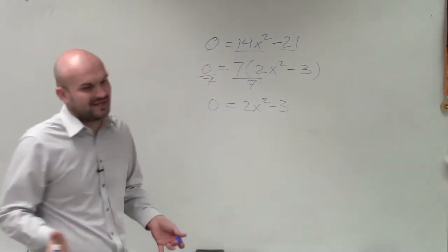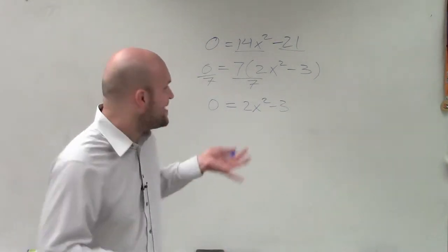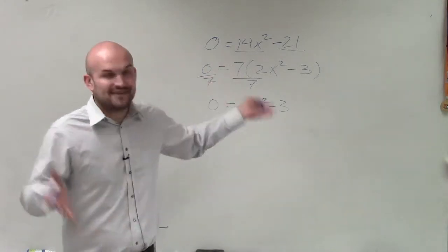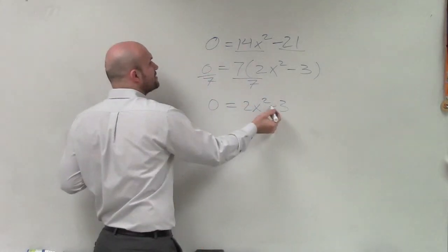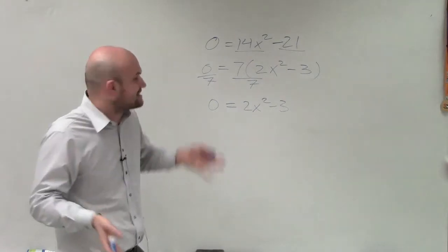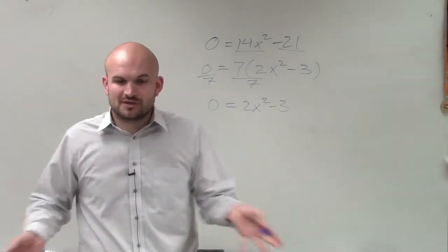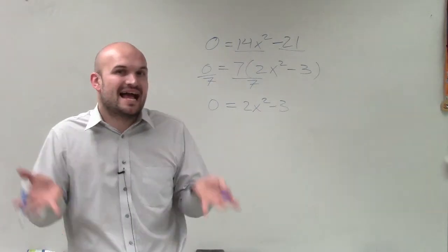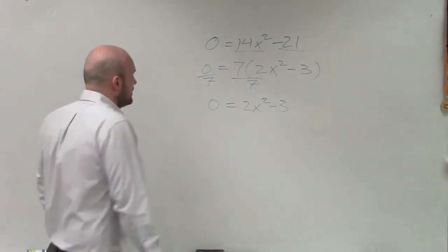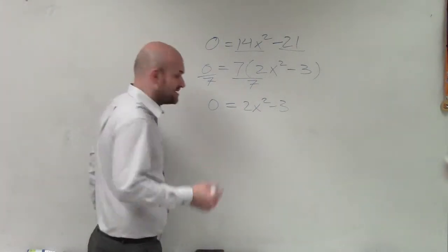And the importance of this, which you need to understand, is that this 7 is not affecting our solutions. The solution for 2x² - 3 is going to be the exact same solutions for 14x² - 21. If you graph both of those, they're going to have the exact same x-intercepts.